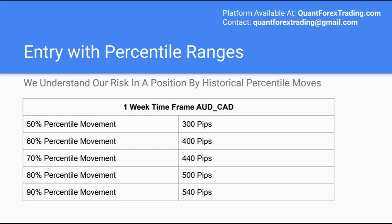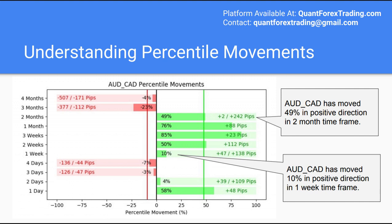Let's look at the AUD over the weekly timeframe. What we are showing in this table is the historical movements of the currency pair in sorted order, otherwise known as a percentile. So we would say, if this week the AUD CAD moved 440 pips compared to historic movements, such a range falls under the 70th percentile range, meaning it's a reasonably large move compared to all previous historic movements. This chart is continuously updated on the website, and gives the percentile movements for the AUD CAD over different timeframes.